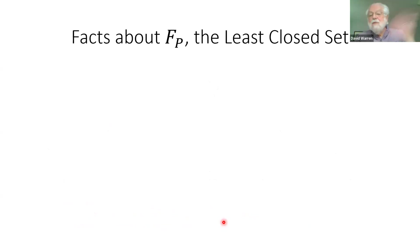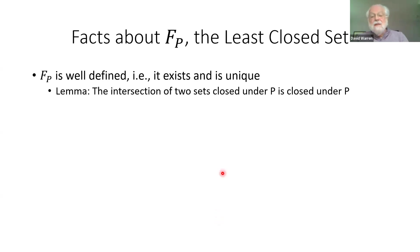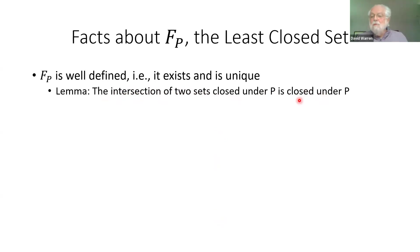What are some facts about F_P, this least closed set over a set of operators P? The first thing is that it's well-defined — it's unique. There is a unique least closed set. That's easy to see: if you think of two sets closed under P, then the intersection of them is also closed under P. And once you have that, there will be a unique least one.